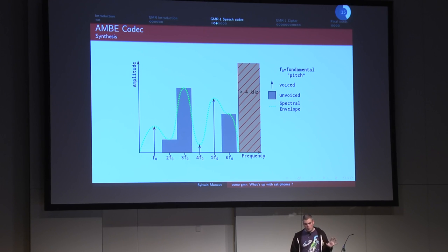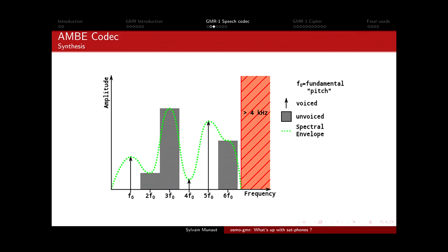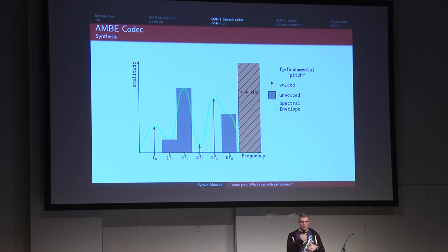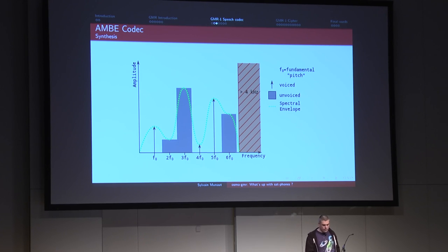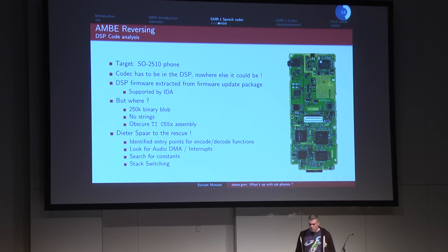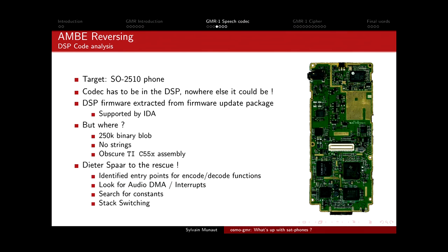In synthesis, for each possible harmonic - f0, 2f0, 3f0 - you have the voiced/unvoiced decision. Voiced means reconstructing that frequency as a pure sinusoidal tone; unvoiced means filling that small band with noise. With this approach they can reconstruct human voice pretty well. Now that we understand how the codec works and what we're looking for, we can start looking for where to find it.